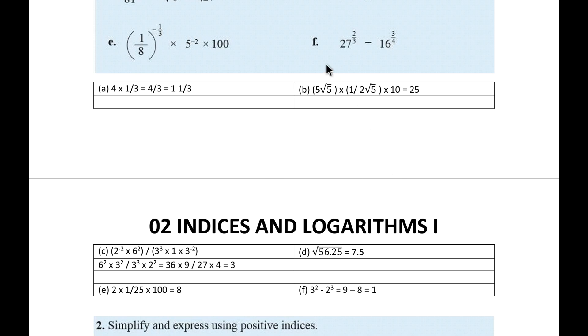Next one, F, is much easier. 27 means 3 to the power 3 times 2 over 3. Here 3 and 3 cancel, get 3 to the power 2. Here 2 to the power 4. Then 4 and 4 cancel, it's 2 to the power 3. So 3 to the power 2 is 9, 2 to the power 3 is 8. So 9 minus 8 is 1.